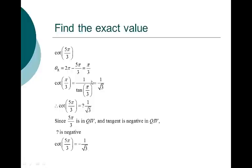That's my process: find the reference angle, find the sine, cosine, or tangent of that depending on which function we're dealing with. If it's a reciprocal, take the reciprocal of sine, cosine, or tangent. Then I know my base answer, and I figure out if it's positive or negative by determining which quadrant I'm in. I'm always going back to sine, cosine, and tangent — I don't deal with cosecant, secant, or cotangent directly.